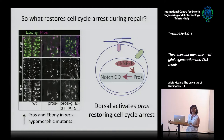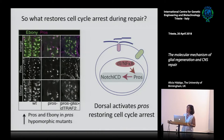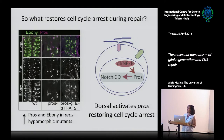This is one of the datasets showing that Prospero depends on Dorsal. By expressing DTRAF2 we promote the translocation of Dorsal. Using a hypomorphic Prospero mutant background - which allows us to modulate Prospero levels - we found that in the hypomorphic mutant we only have a few Prospero-positive cells, but these increase dramatically when we activate Dorsal in the same background. We have an increase in the number of Prospero glia and an increase in Prospero levels. Dorsal activates Prospero.